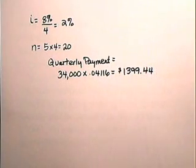So we see that if he makes quarterly payments of $1,399.44 every quarter for 5 years into an account paying 8% compounded quarterly, he will have the needed $34,000.